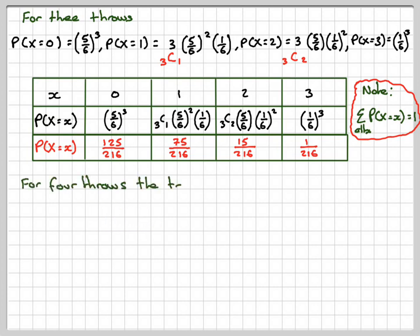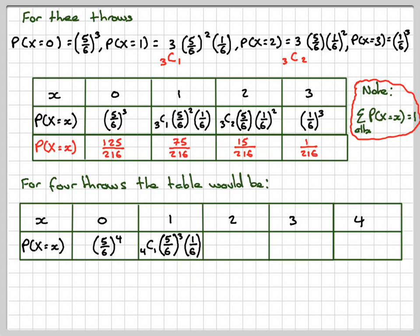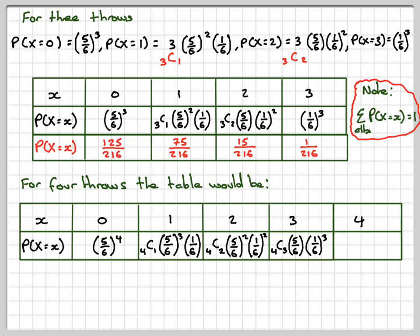As an extension, what would the table look like for 4 throws? X would be 0, 1, 2, 3, or 4. For X=0: five-sixths to the power 4. For X=1: 4C1 times five-sixths cubed times one-sixth. For X=2: 4C2 times five-sixths squared times one-sixth squared. For X=3: 4C3 times five-sixths times one-sixth cubed. For X=4: one-sixth to the fourth.